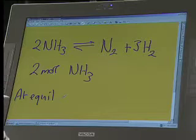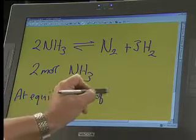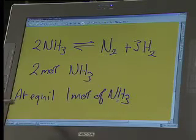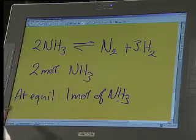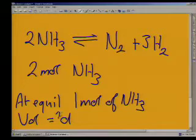And we were told that at equilibrium, we had only one mole left, one mole of ammonia left. And we were told that the container, the volume of the container was two decimeters cubed. Now,